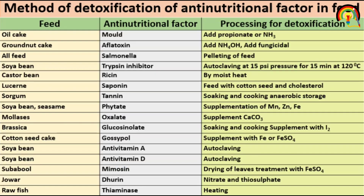Here one side lists the food and the other side lists the anti-nutritional factor present and the processing method for detoxification. Oil cake contains mold — ammonia can be added for detoxification. Ground nut cake contains aflatoxin — add fungicide. Soyabean contains trypsin inhibitor, which is an anti-nutritional factor. Its detoxification can be done by autoclaving at 120 degrees Celsius for 15 minutes at 15 psi pressure. Autoclaving is a method of sterilization.